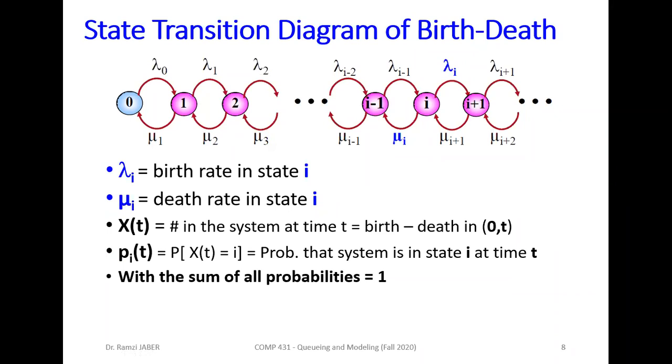With condition here: the sum of all probabilities must equal to 1 to call it birth-death Markov chain. Every P_i, the sum of them must be equal to 1 to call it birth-death Markov chain.